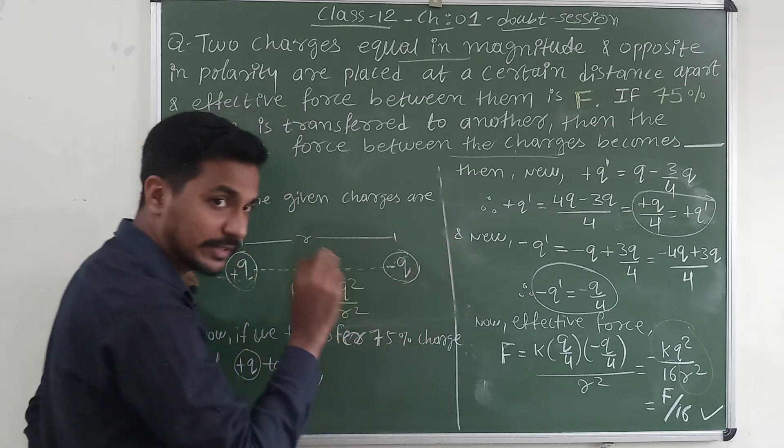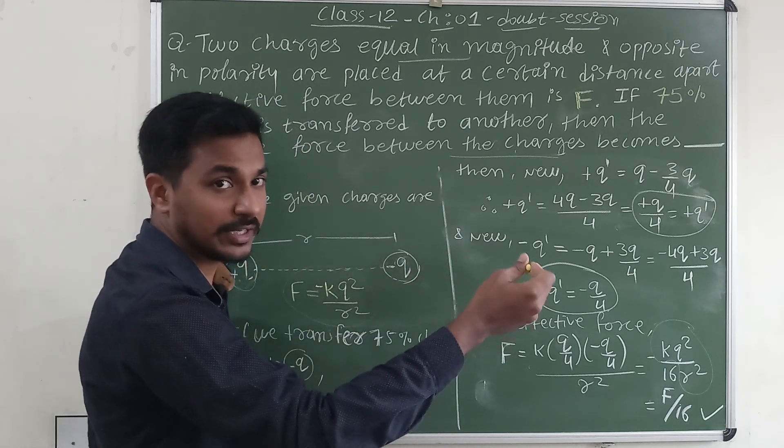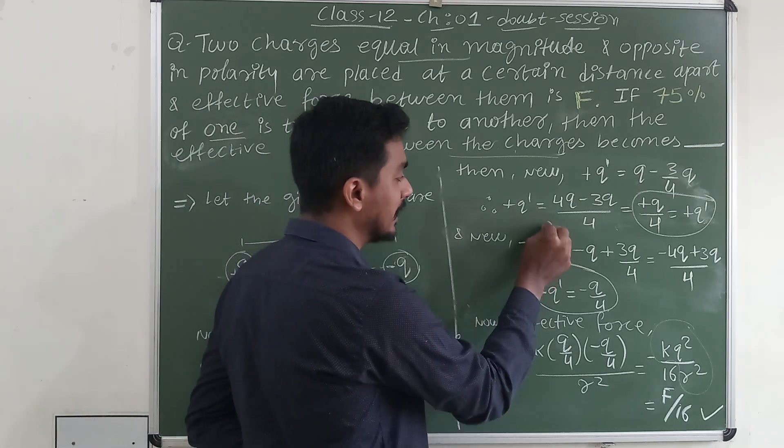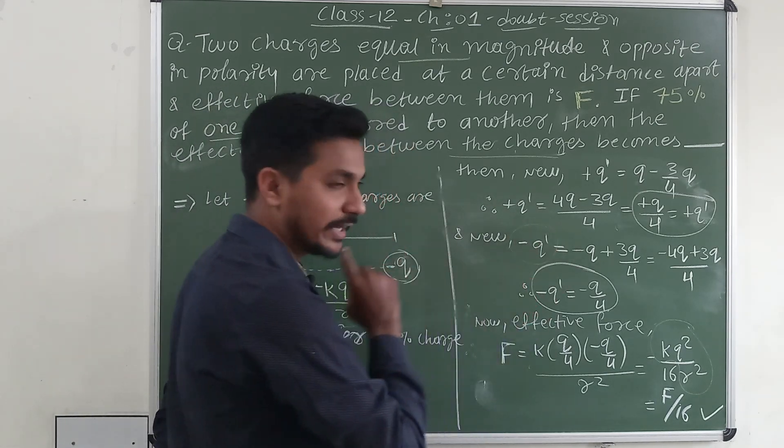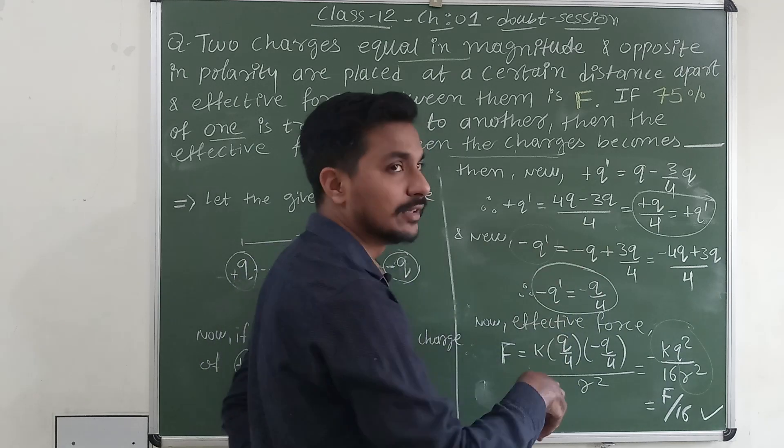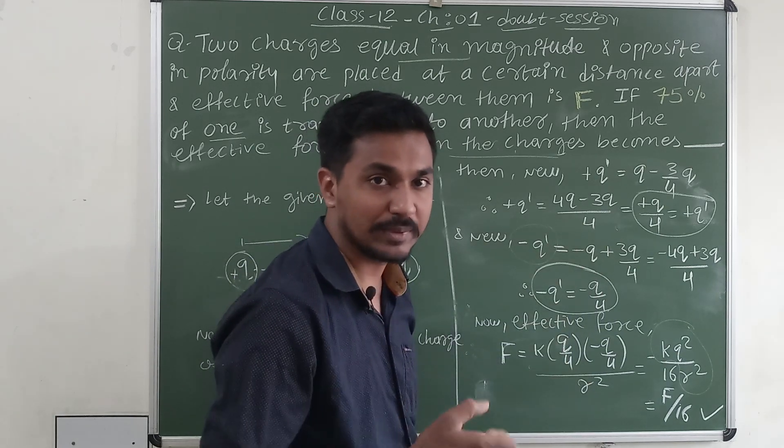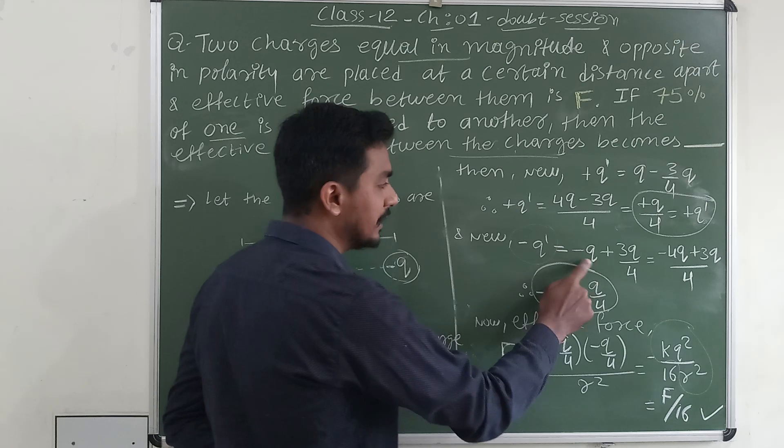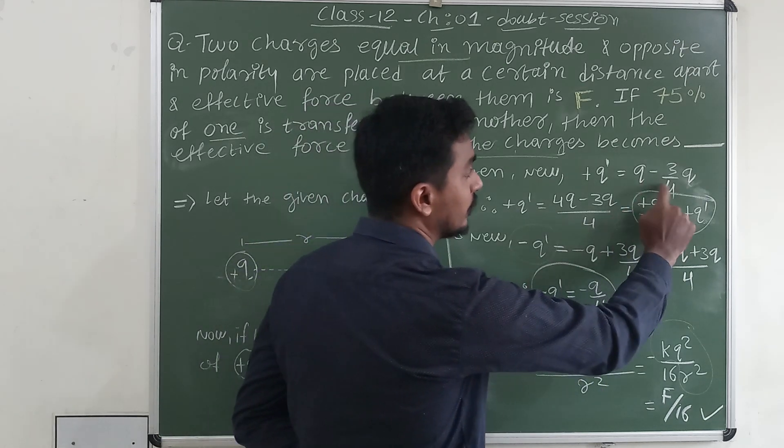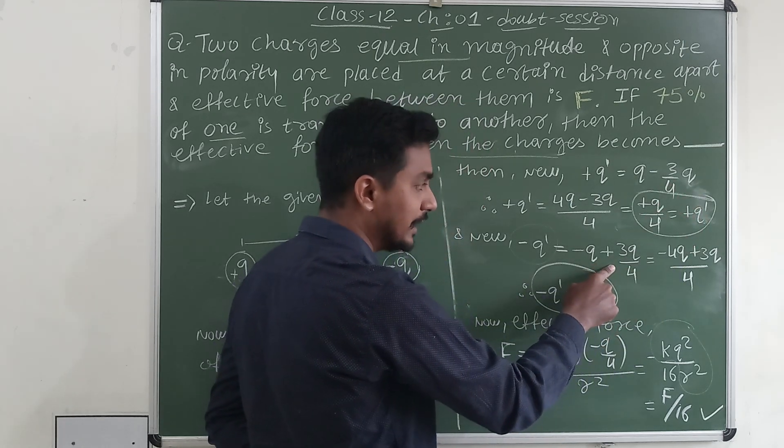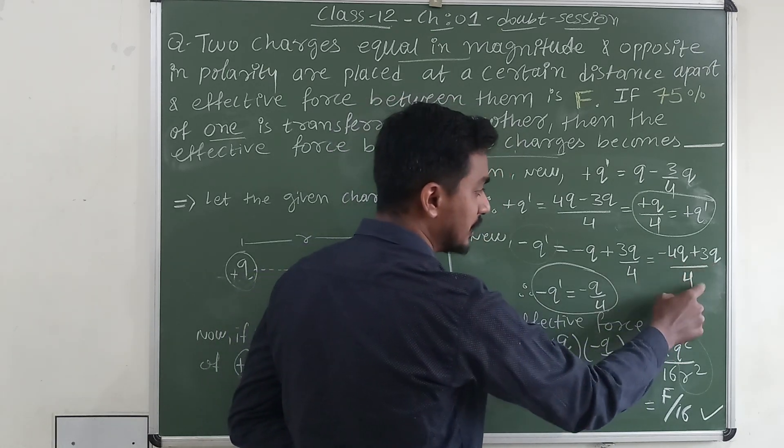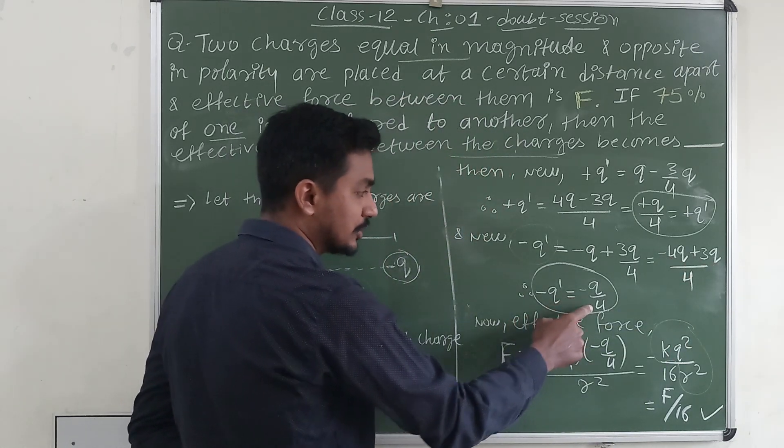Now, when we transfer this positive charge to negative charge, then also the magnitude of the negative charge changes. Here we have negative charge, but it is new negative charge. Original negative charge is minus Q. Here minus Q, we are adding some amount, that is 75 percent of the positive charge in it. Minus Q plus 3 by 4 from here we are subtracting, so here we are adding it. By simplifying it, we get minus 4Q plus 3Q by 4, which is minus Q by 4.